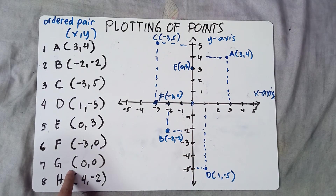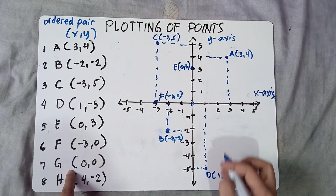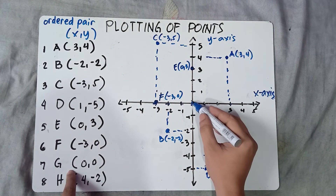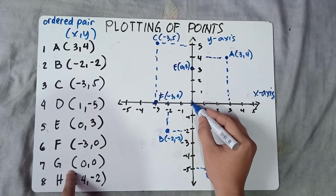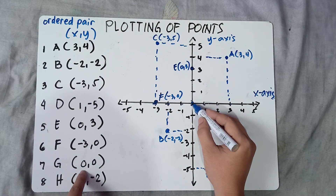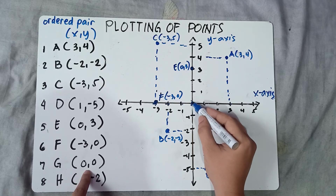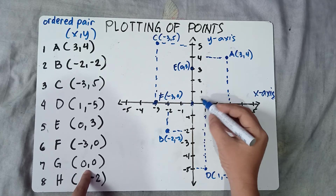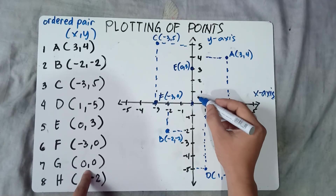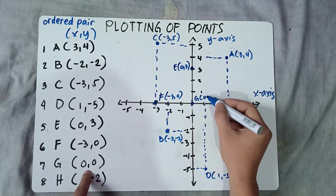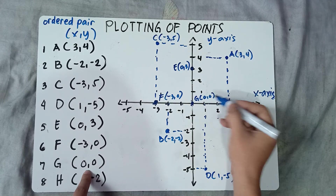Next is G: (0, 0). If it's (0, 0), therefore that is the origin — no movement at all. That's the center part, the origin. So G equals (0, 0).